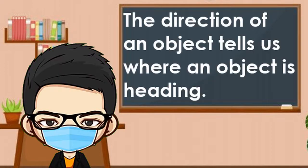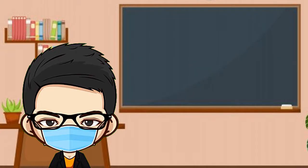The direction of an object tells us where an object is heading. By stating the direction of movement of an object, we can describe its motion.